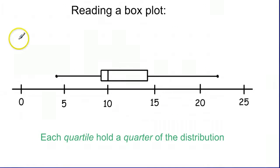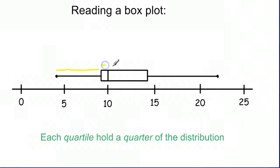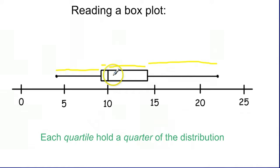Reading a box plot is just going the opposite direction. This is the plot I just drew, a little bit prettier than my first one. The big idea is that each of the quartiles — each of the fourths — holds a quarter or a fourth of the distribution. They're not all equally spaced; it's based on the numbers that we put in in the first place.